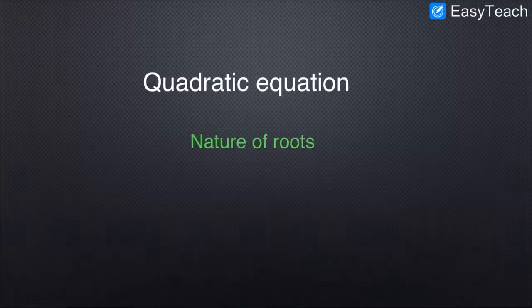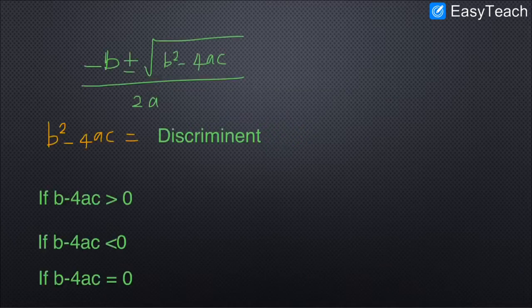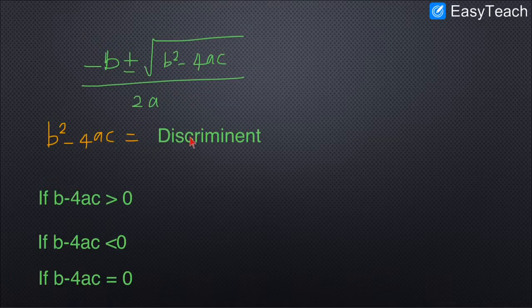In the last class we learned how to apply the quadratic formula to find the roots of quadratic equations. Here we are going to find the nature of roots. The quadratic formula is: x = (-b ± √(b²-4ac)) / 2a. The term b²-4ac is called the discriminant, because there are three different conditions based on it to find the nature of the roots.